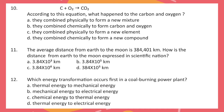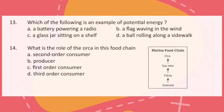Question 12: Which energy transformation occurs first in a coal burning power plant? Question 13: Which of the following is an example of potential energy? Question 14: What is the role of the orca in the food chain?